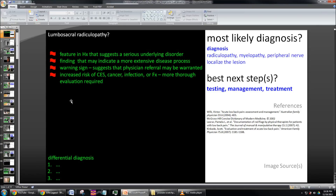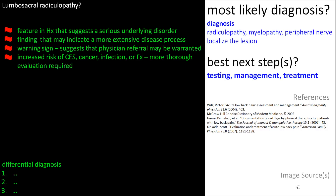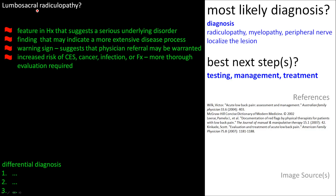I'd like to go through a few cases of lumbosacral radiculopathy, which is a disorder of the lumbar or sacral nerve root or spinal nerve. The cases may represent a mimicking condition presenting as radiculopathy, but may be in the spinal cord — a myelopathy — or a peripheral nerve. As we go through each case, try to localize the lesion, identify red flags suggesting systemic or widespread involvement, and come up with a differential diagnosis including the most likely diagnosis and best next steps.